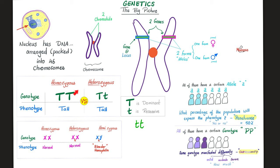Capital T, capital T — exactly the same alleles — homozygous, and tall. But small t, small t — also homozygous, but short. If you have one big T and one small t, that is heterozygous — different — and that individual is still tall.